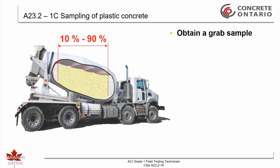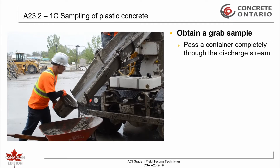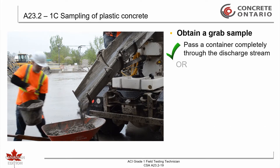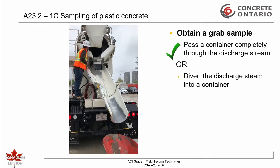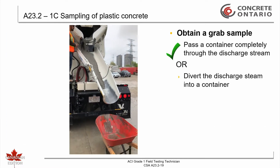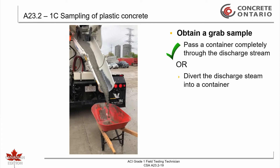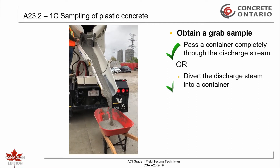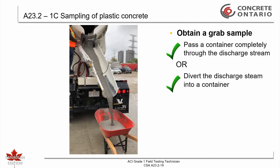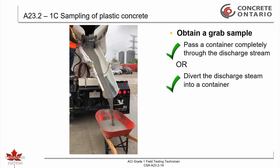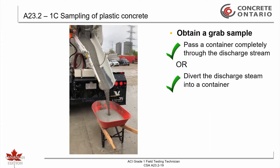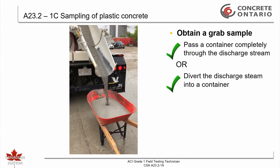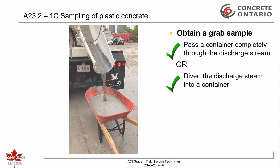It is required to obtain a grab sample by passing a receptacle completely through the discharge stream, or completely diverting the discharge stream into a sample container such as a wheelbarrow, taking care not to obstruct or retard the discharge and avoid segregation. Note, more than one container may be used to obtain a single grab sample. When multiple containers are used, the samples shall be remixed into a single composite sample.